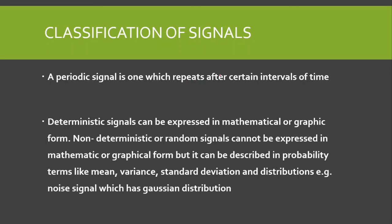Next are periodic and non-periodic signals. A periodic signal is one which repeats after certain intervals of time. In mathematical form: g(t) = g(t + T), where capital T is the time period. For discrete signals, we write g(n) = g(n + N), where N is a discrete number such as 1, 2, 3, etc. A periodic signal should start from minus infinity and continue till positive infinity.